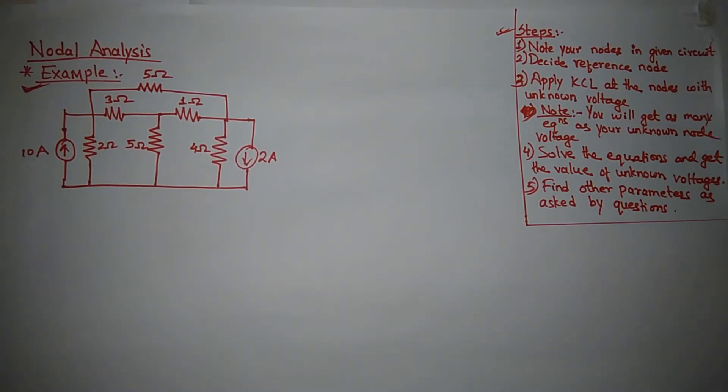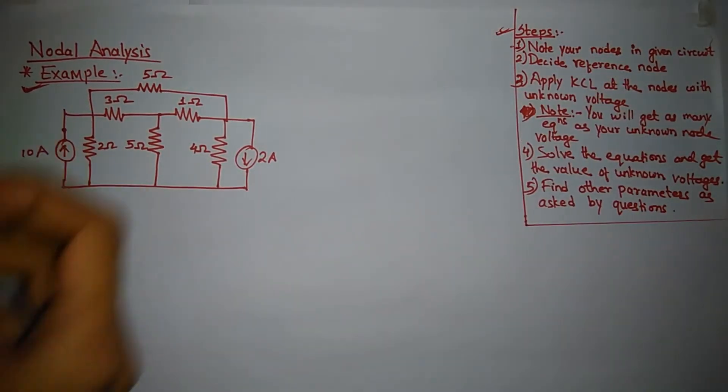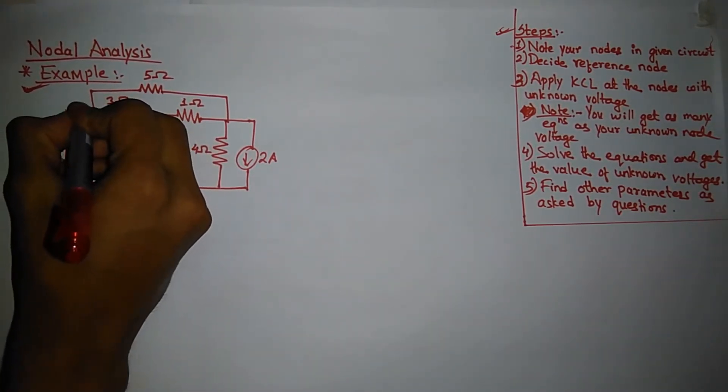So now let's solve the problem. Okay, first step: note your nodes in the given circuit. I'll note down my nodes in the circuit—node number one, node two, node three, and node four.